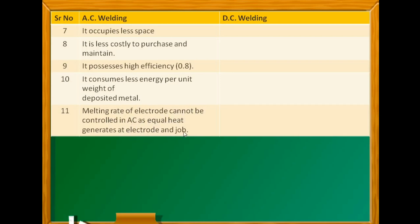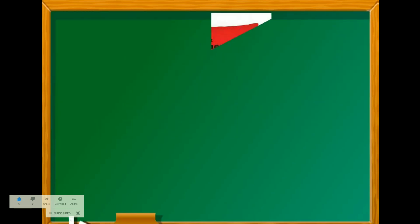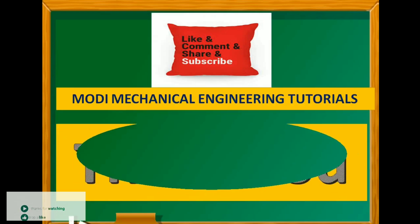These are the basic differences between AC welding and DC welding. This will help in practical selection — choosing either AC or DC supply depending on the quality of weld required, the penetration needed, and the characteristics of the base metal and parent materials. I hope you understand this. If you like this, please subscribe and share Modi Mechanical Engineering Tutorials. Thank you and keep watching.